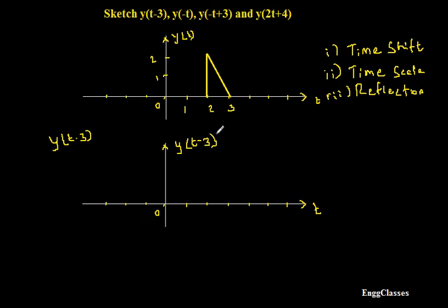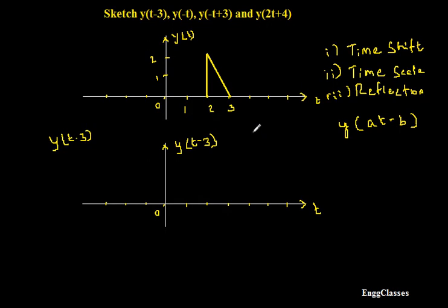If I consider the signal y of t minus 3, there is only a time shift. Any signal should always be compared with the standard form y of at minus b, where a is the scaling factor and b is the shift. Comparing, I get b equal to 3. Since b is greater than 0, I need to shift the signal to the right by 3 units. So I add 3 to the original limits: 2 plus 3 becomes 5, and 3 plus 3 becomes 6. The new signal will exist from 5 to 6.